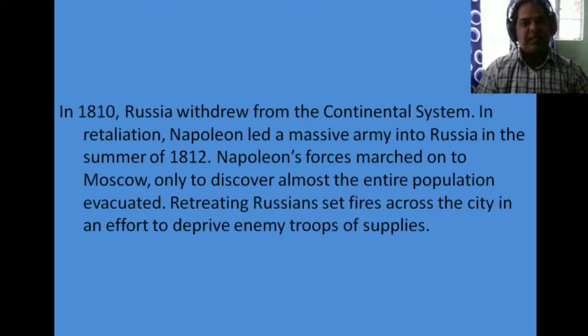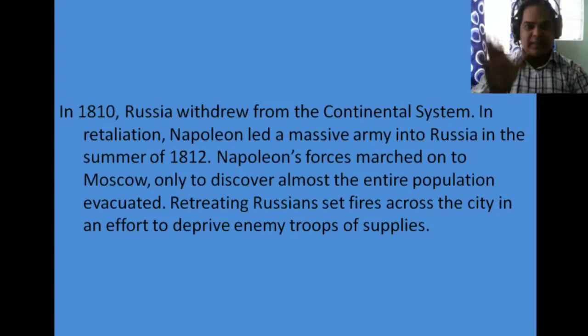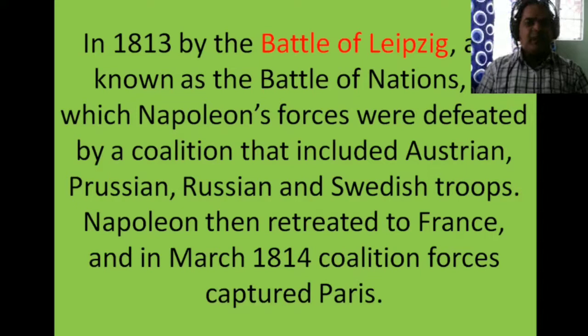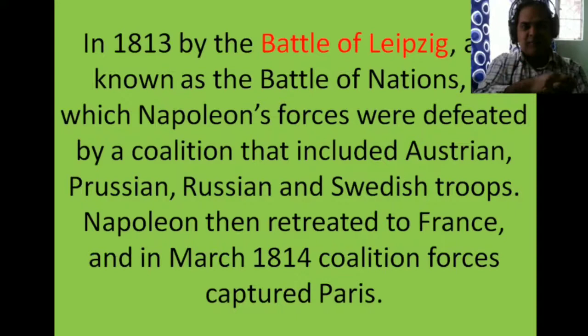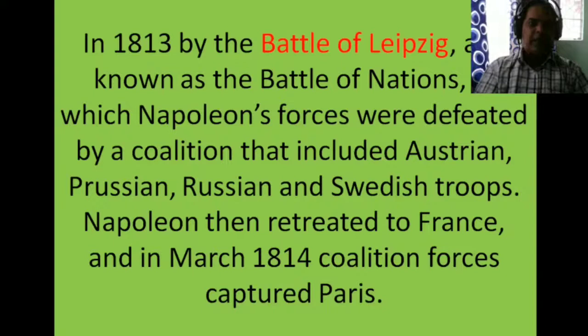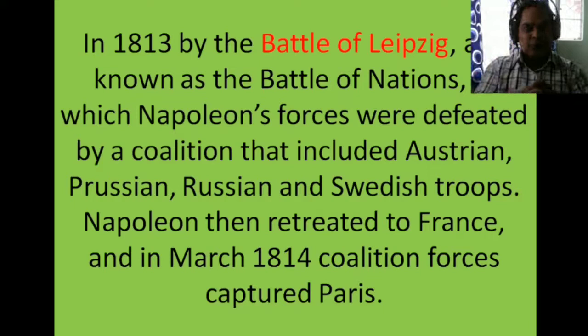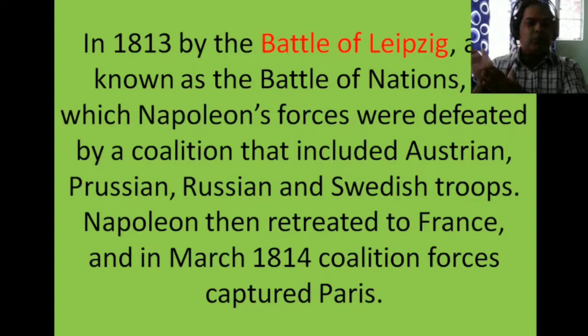In 1813, at the Battle of Leipzig — also known as the Battle of Nations — Napoleon's forces were defeated by a coalition of Austria, Prussia, Russia, and Sweden, who had made an alliance to fight against him. Napoleon then retreated to France, and in March 1814 coalition forces captured Paris, the capital of France.